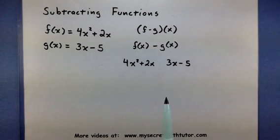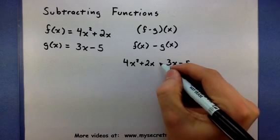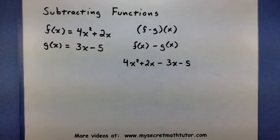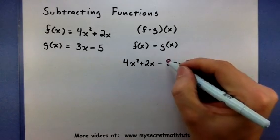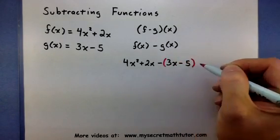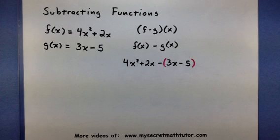Now, be careful. You want to subtract the entire function of g. If you just put a negative sign, then it's like you've only subtracted the 3x. We want all of it subtracted. So make sure you put a set of parentheses around that second function when you're subtracting. This will help you distribute the negative sign.